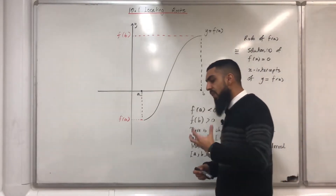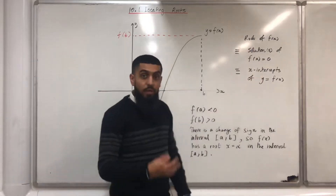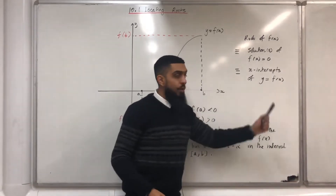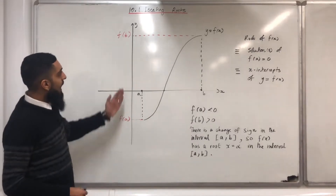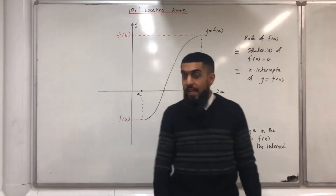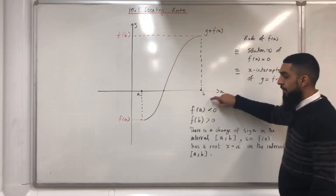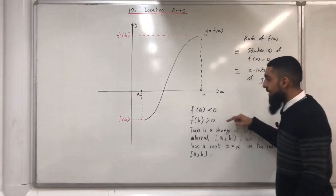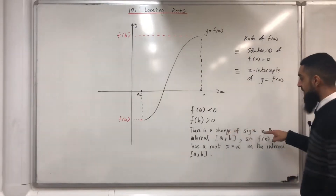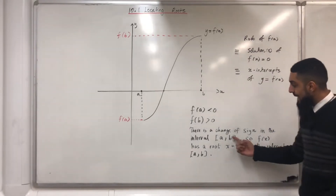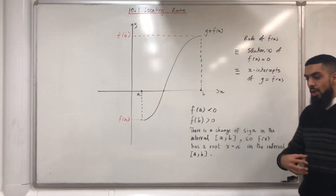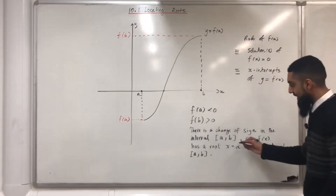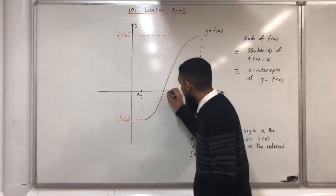I'm going to introduce this topic by going through what it means by root of f(x). A root of f(x) is equivalent to writing the statement 'solutions of f(x) = 0', which is equivalent to writing the statement 'x-intercepts of y = f(x)'. Over here I've got a coordinate grid y against x and I've sketched the graph of y = f(x) for the domain a ≤ x ≤ b. My first observation is that f(a) < 0 and f(b) > 0, so there is a change of sign in the interval a to b. Therefore f(x) has a root x = α in the interval a to b. The root is simply the x-intercept, labelled x = α on the coordinate grid.